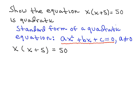Let's take a look at the example we have here. x times the quantity x plus 5 equals 50. And let's show that this is indeed a quadratic equation.